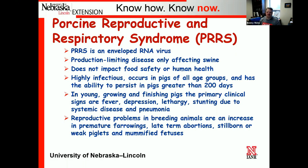PRRS — porcine reproductive and respiratory syndrome — is an enveloped RNA virus. We call it a production-limiting disease; it only affects swine and is not a food safety or human health concern. It is highly infectious, occurs in pigs of all age groups, and has the ability to persist in individual pigs and herds for greater than 200 days. In young growing and finishing pigs, you primarily see fever, depression, lethargic animals, stunted growth due to systemic disease, and pneumonia. On the breeding herd, you get increased premature farrowing, late-term abortions, increased stillborns, weak pigs, and mummified fetuses — a double whammy of fewer animals and sick, persistent ones.